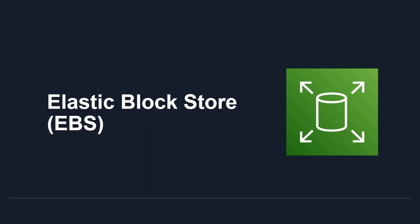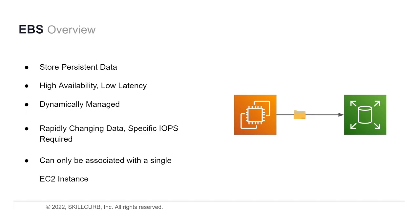Elastic Block Store, or EBS. EBS is used to store persistent data. The easiest way to think of EBS is like a computer hard drive — you keep the blocks you really want to retain no matter what happens, so even if you stop using it, your data is still there. EBS is especially useful if you need high availability, low latency, and high IOPS. EBS volumes are dynamically managed, meaning you can dynamically change the configuration of a volume attached to an instance.